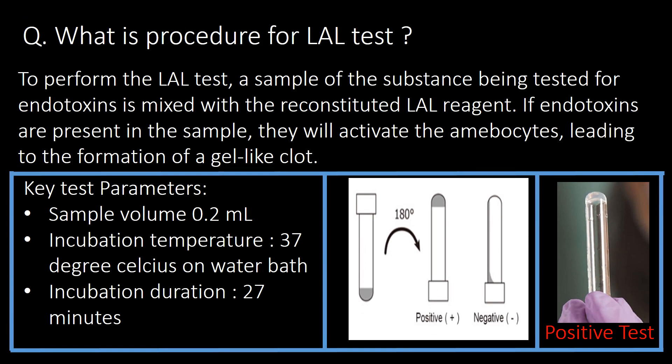What is the procedure for the LAL test? To perform the LAL test, a sample of the substance being tested for endotoxins is mixed with the reconstituted LAL reagent. If endotoxins are present in the sample, they will activate the amoebocytes, leading to the formation of a gel-like clot. Key test parameters: sample volume of 0.2 mL, incubation temperature of 37°C on a water bath, and incubation duration of 27 minutes.